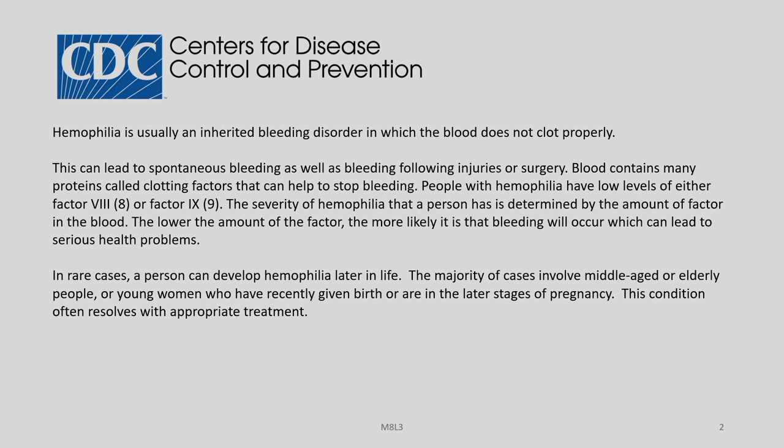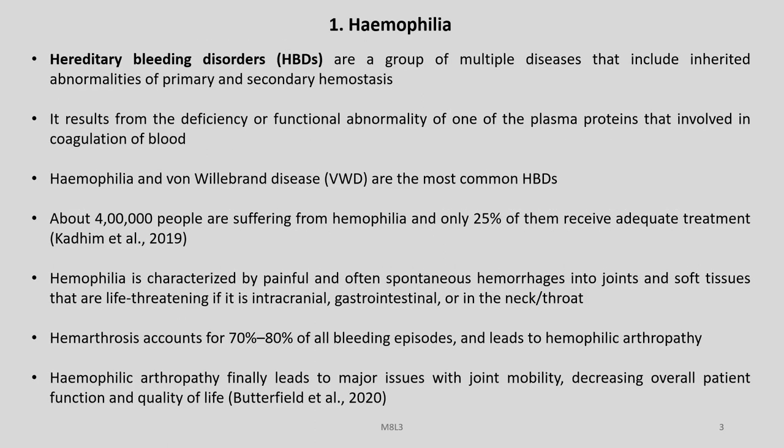In rare cases, a person can develop Haemophilia later in life. The majority of such cases involve middle-aged or elderly people, or young women who have recently given birth or are in the later stages of pregnancy. This condition often resolves with appropriate treatment. Haemophilia is a hereditary bleeding disorder and is actually a group of multiple diseases that include inherited abnormalities of primary and secondary haemostasis, resulting from deficiency or functional abnormality of one of the plasma proteins involved in blood coagulation.